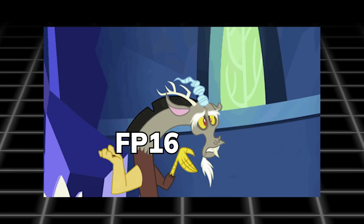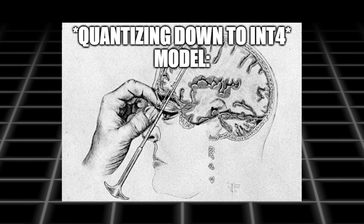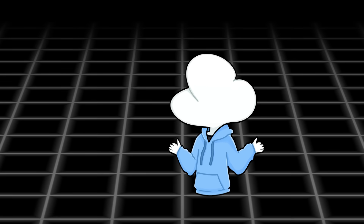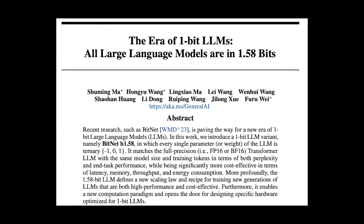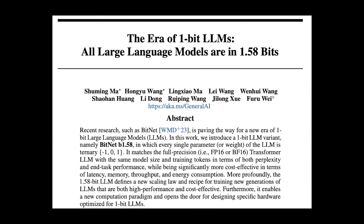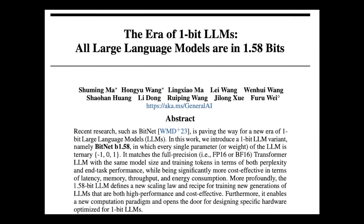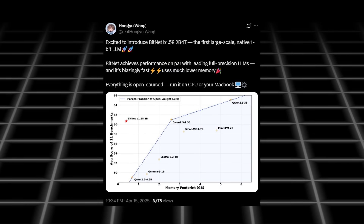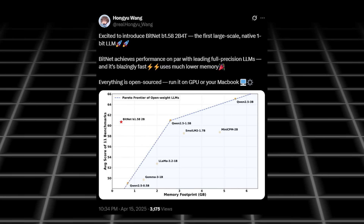But if you quantize down to INT4, isn't the model going to be extremely lobotomized? Well, how you quantize them makes a huge difference. Because of that, there are even researchers working on proving LLMs could run with just one bit per weight — and just two months ago, they showed the world that it actually works.